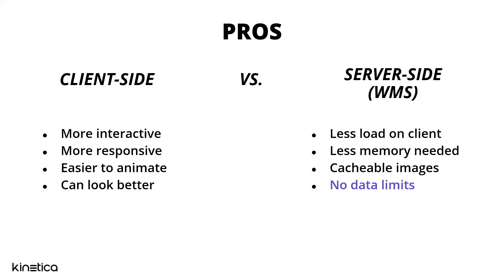On the server side, the pros are that because everything is happening on the server, the data crunching is happening on the server, so there's less load on the client. You don't need to bring all that data in to render it, so there's obviously less memory needed and less bandwidth needed. If you're frequently looking at the same image, some of those images can be cached so you won't be going back to the server constantly. And there are really no data limits. On the client side you don't know what you're working with — it could be a cell phone with a small amount of memory — but your Kinetica server is going to be capable of crunching a lot more data.